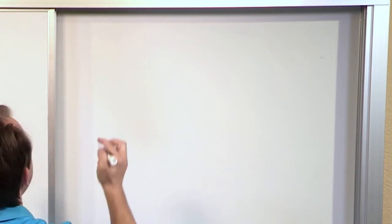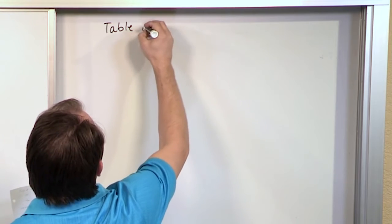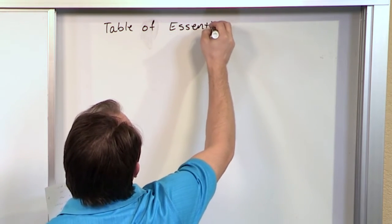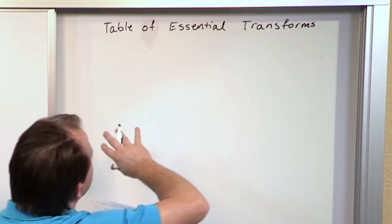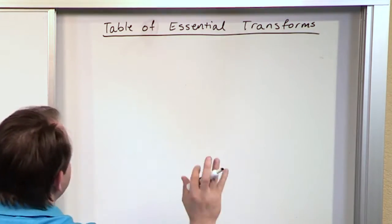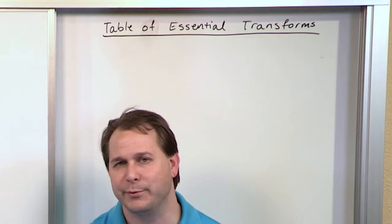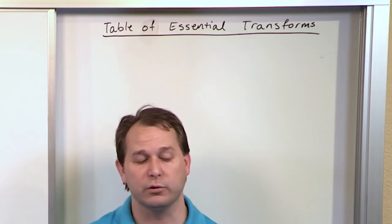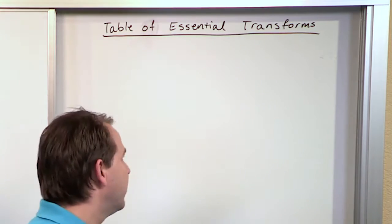Now what we want to do is begin to construct our table of essential transforms. This is basically a summary of what we have already derived. I'm going to write this on the board and leave it up, and as we work problems going forward we will refer back to it. In your textbook — whether it's a differential equations book or another class — there's probably a table of Laplace Transforms. Get comfortable with that and compare it to what we're writing down here.